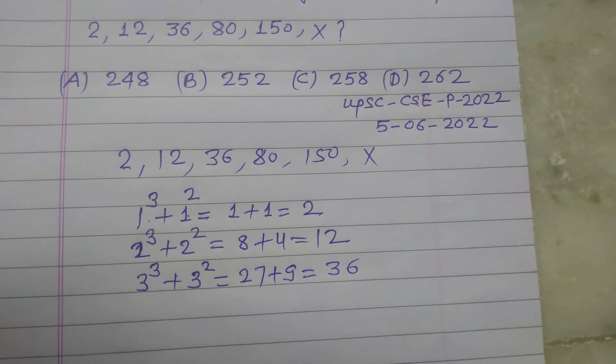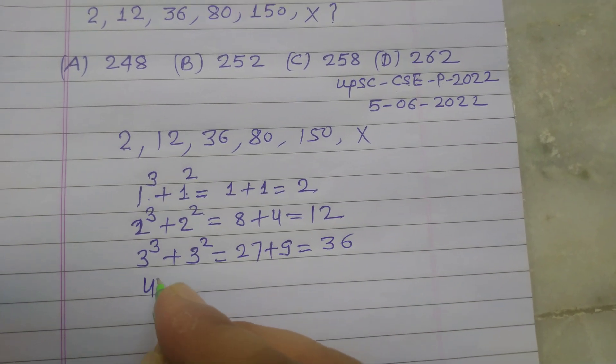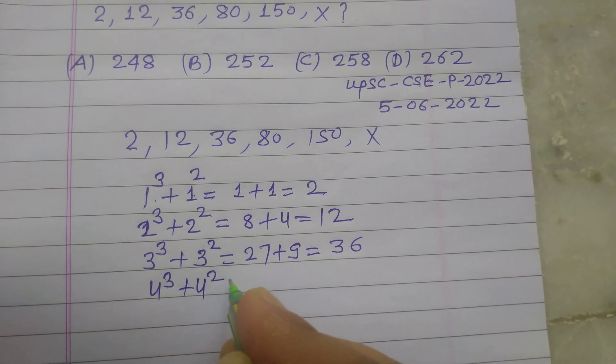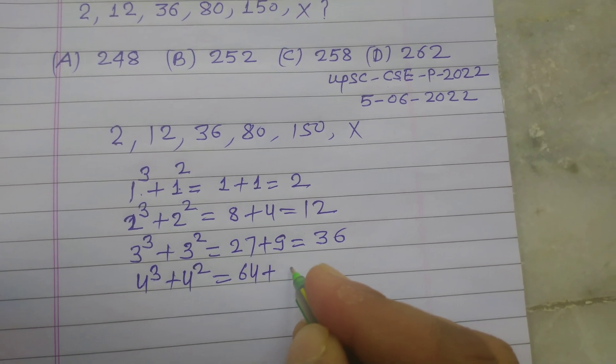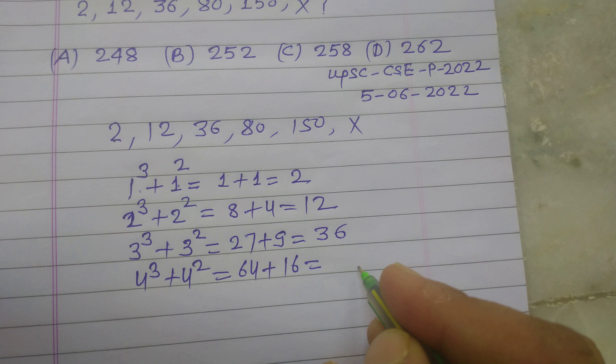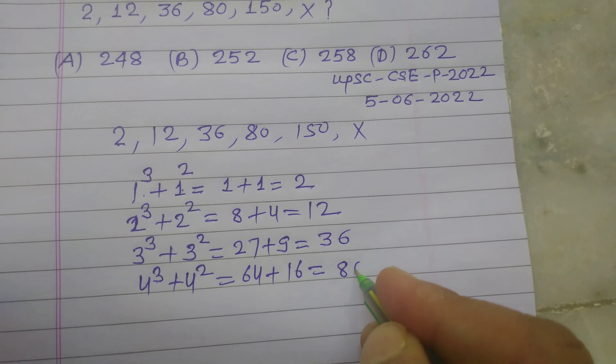So 36 is coming, the third term. Now 4 cube plus 4 square, 4 cube is 64, 4 square is 16, 64 plus 16. So we got 80.